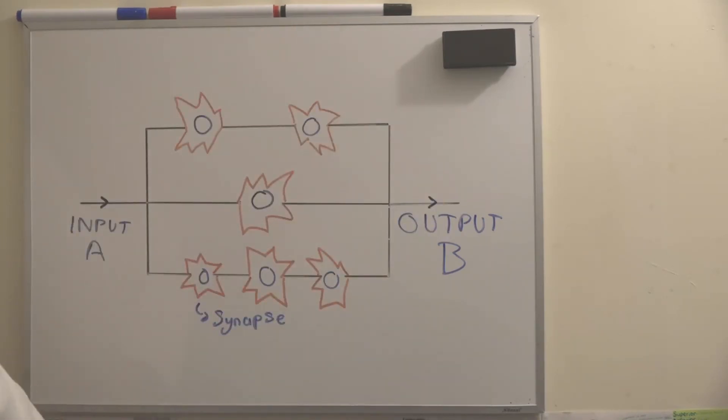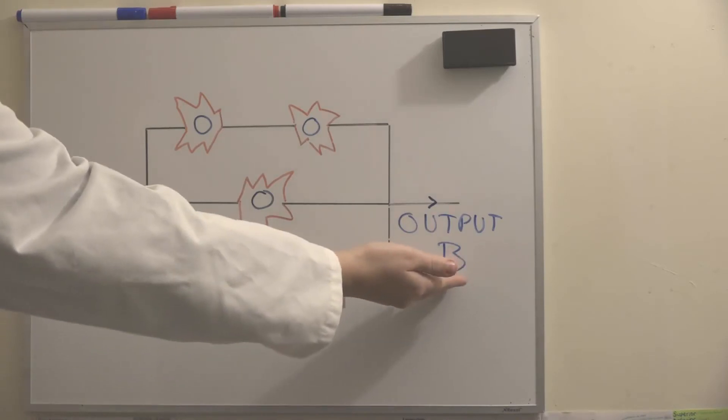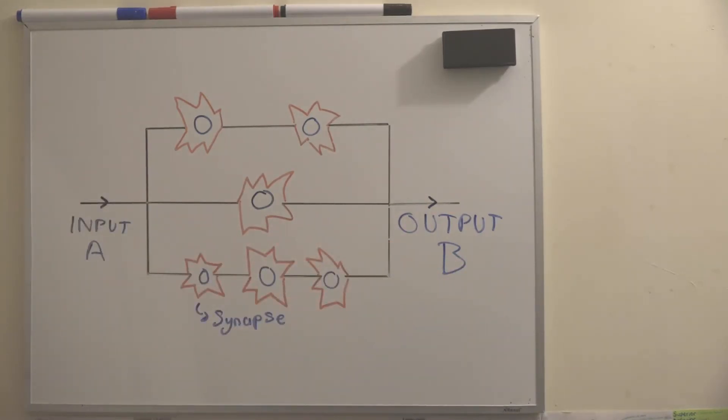Assume the time taken to cross each synapse is the same. The stimulus initiated at A will take different times to reach output neuron B, depending on the number of synapses involved. The result is that the initial signal is maintained over a long period of time.